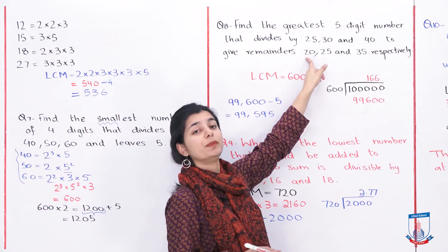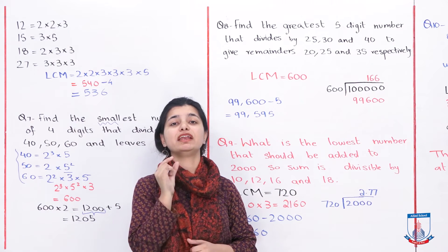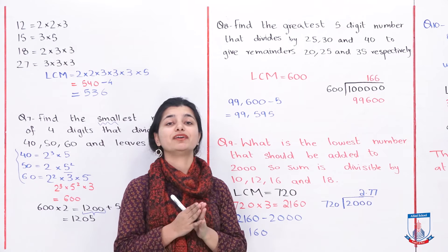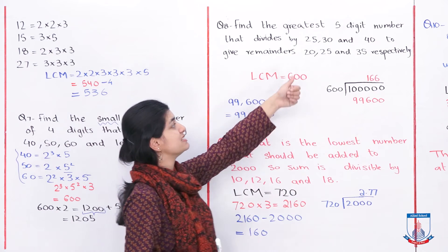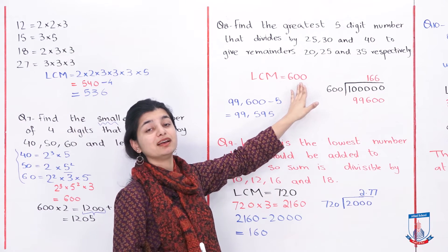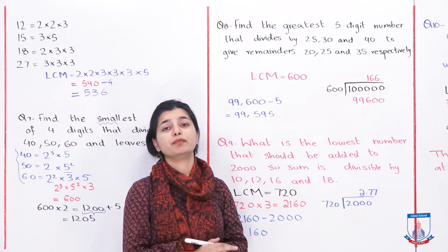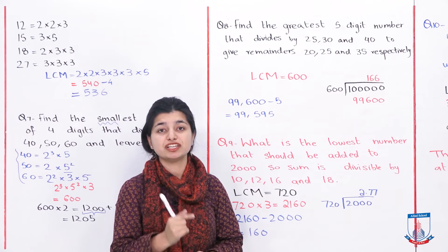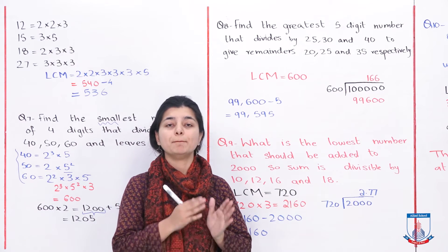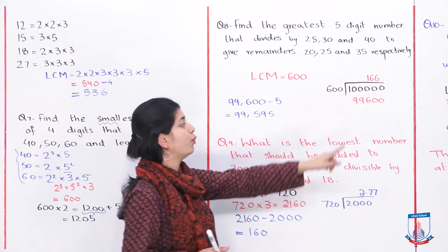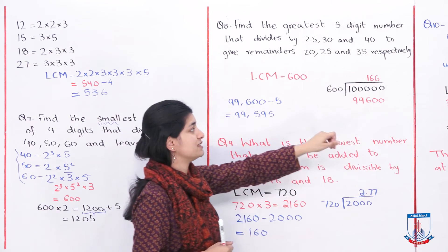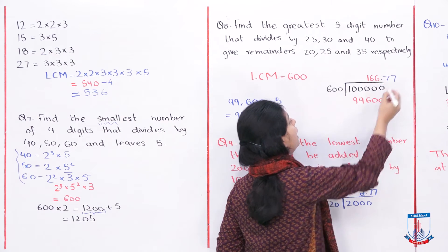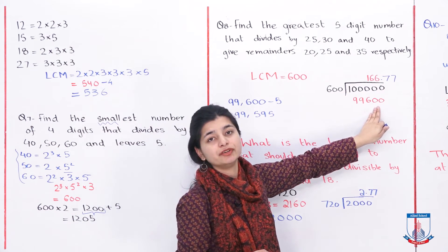We find the prime factors of 25, 30, and 40, then multiply using the highest powers. The LCM will be 600. Now, the next step is to find the largest 5-digit number that is a multiple of 600. To do this, we need to know where 600 fits within 5-digit numbers. We divide 100,000 — the first 6-digit number — by 600, which gives approximately 166 point something. The largest multiple of 600 within 5 digits is therefore 99,600.